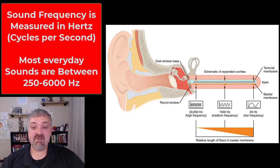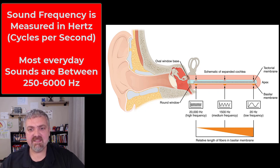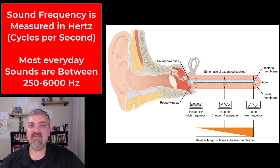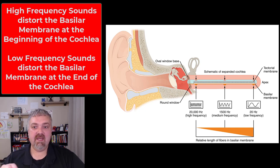In the cochlea, we measure frequencies in hertz or cycles per second. Most everyday sounds fall between about 250 and 6,000 hertz, though we're exposed to high and low frequency sounds daily. Examples of low frequency sounds include a dog barking, a lawn mower, or thunder. High frequency sounds include a child squealing while being tickled, birds chirping, or whistles. As you can see, the beginning of the cochlea processes the highest frequency sounds, getting lower as you go further in.